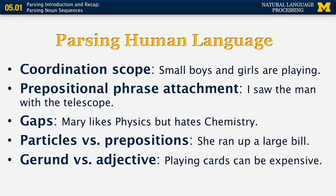The fifth example is the difference between gerunds and adjectives. In-g words in English can be either gerunds, which are verbal forms, or they can be used as adjectives. In the example 'Playing cards can be expensive,' one interpretation is that to play cards can be expensive because you lose money. Another interpretation is that playing cards — a specific type of cards — can be expensive.